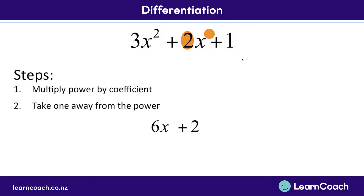Here we have a term by itself. If we were to follow the rules and multiply the power by the coefficient, there's no x term here — that's like saying x to the power of 0. And 1 multiplied by 0 gives us 0, which cancels it out anyway. So if you ever have a number by itself, like this plus 1, cancel it when you're differentiating. The expression at the bottom is actually this top expression differentiated, and that's how we do it.